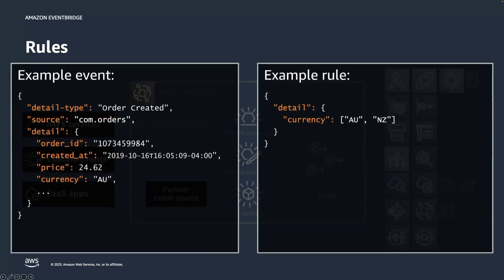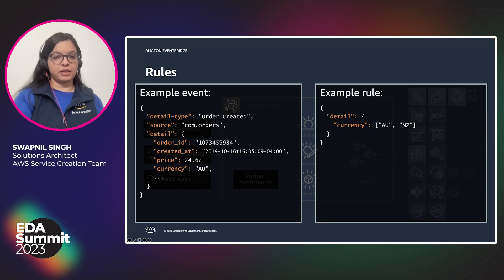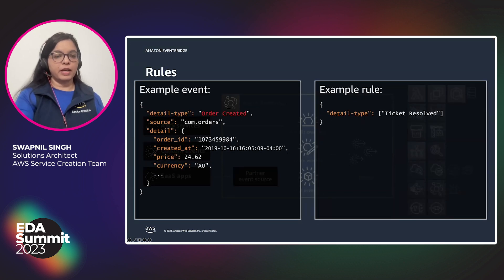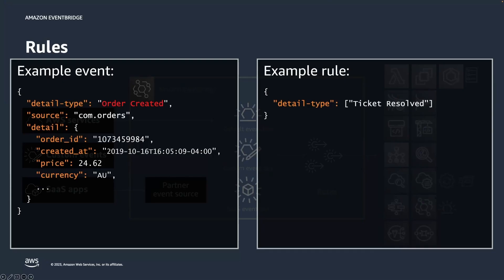Similarly, if you want to send an event to a particular target only when its currency is AU or NZ, you can do that using this rule. As you can notice, it uses the detail section of the event along with the currency field, maintaining the hierarchy of where the currency data element lands in the JSON structure. You can also create a filter for detail-type "ticket resolved" and send it to a particular target.